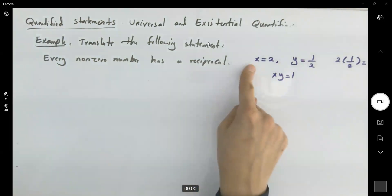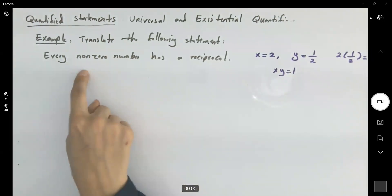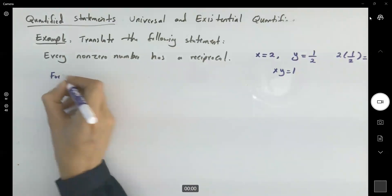In this case, we say that x is a reciprocal of y and y is a reciprocal of x, what we learned in algebra. Now mathematically, we're going to say that every non-zero number has a reciprocal. So what's the meaning of that? It means that for every non-zero number, we have a reciprocal.